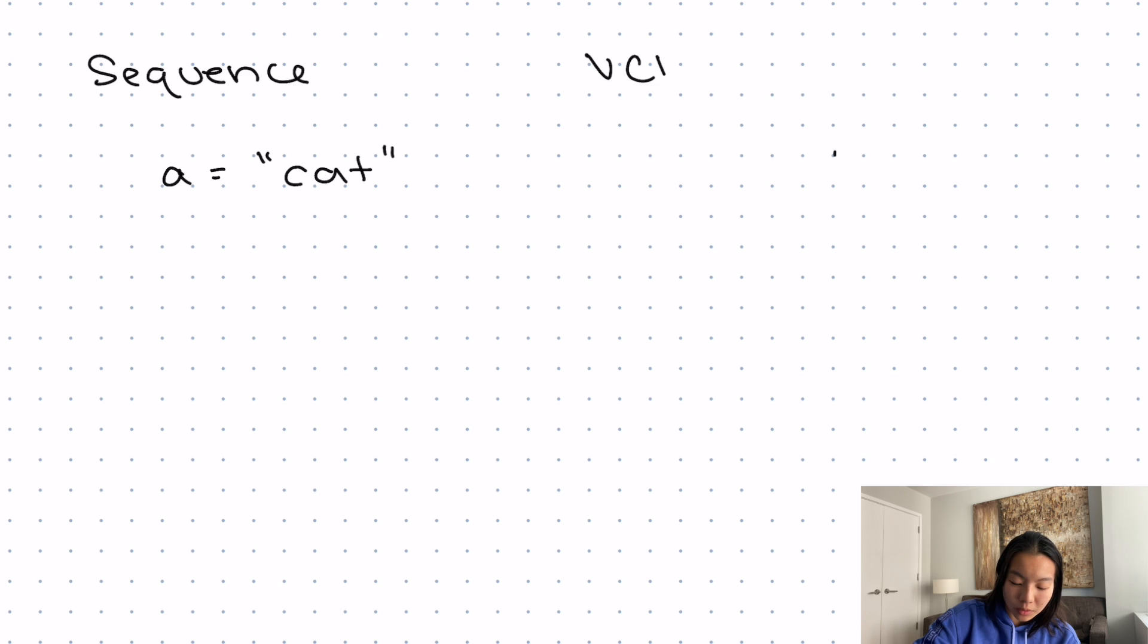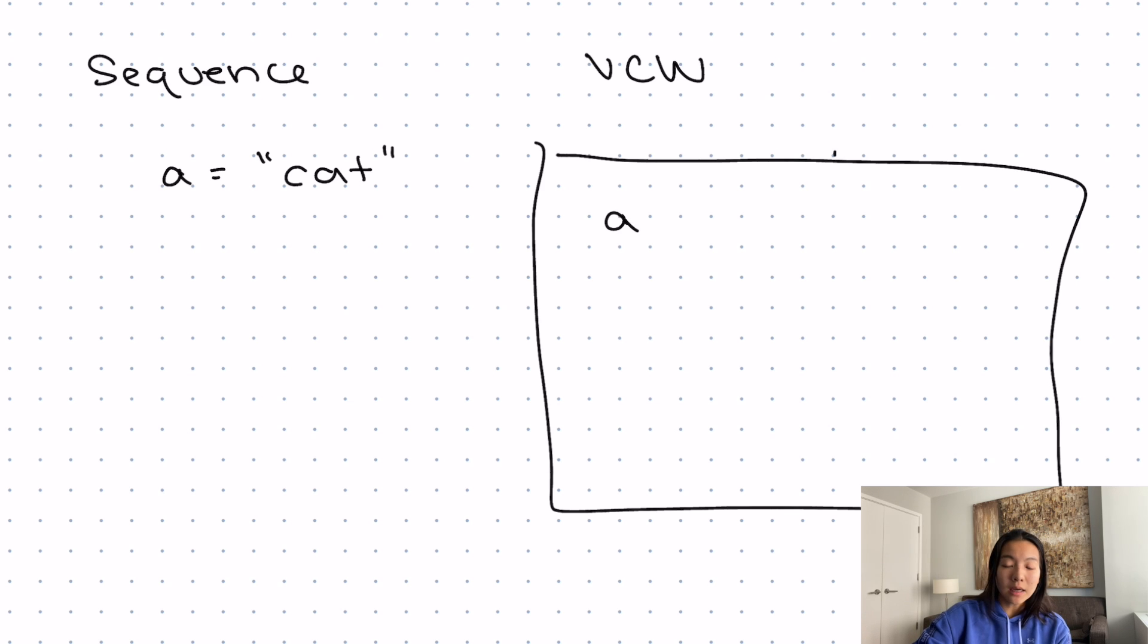In the virtual computer world, how we drew this out in the previous lessons was we had a variable a and then we mapped this to a sequence of characters. So I had c, a, and t.